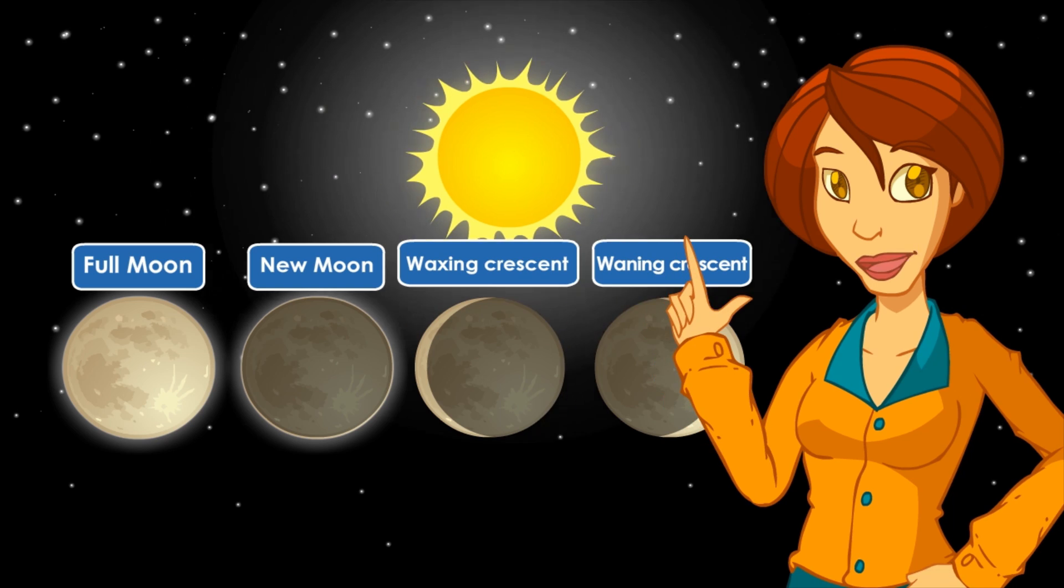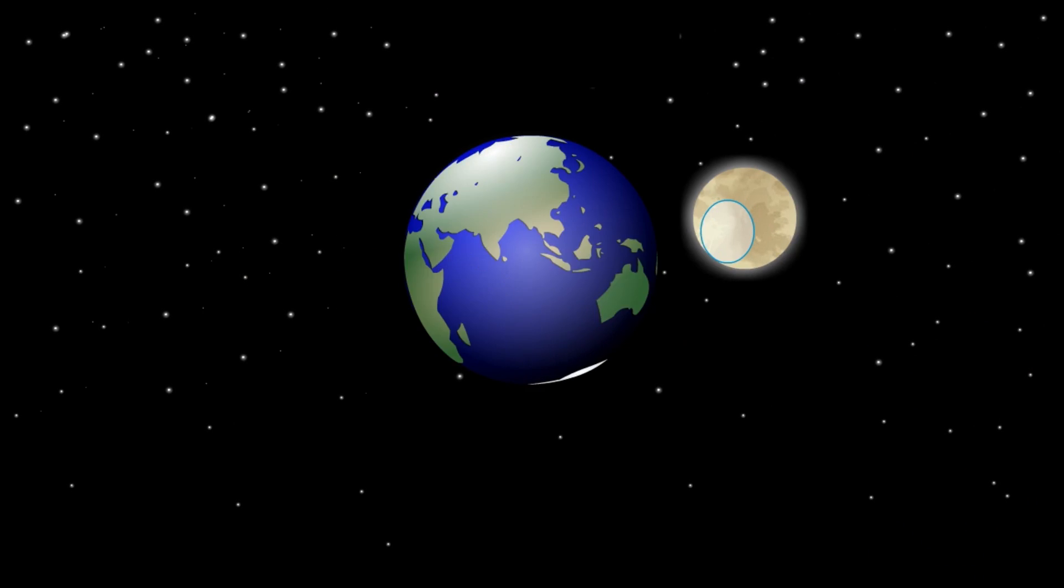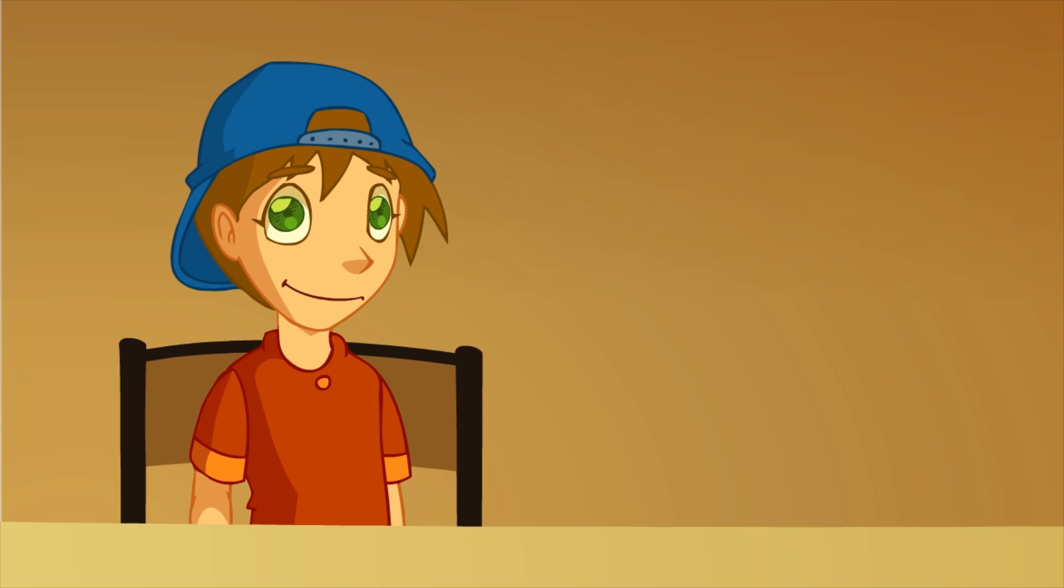They are all different thanks to the Sun. We always see the same side of the Moon, not only because it moves around the Earth, but also because it spins around itself.